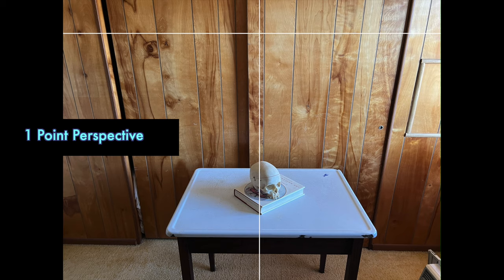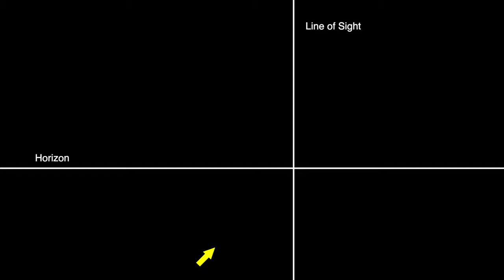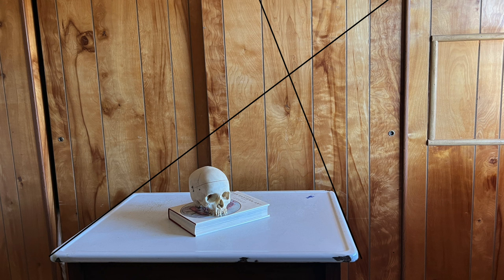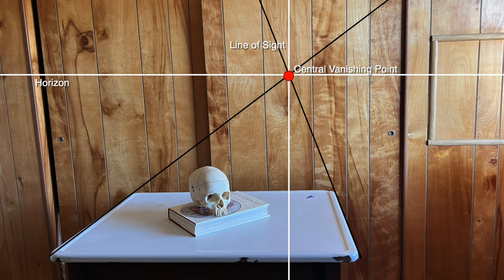The intersection of the horizon and the line of sight is called the central vanishing point. If the front of an object, like this table, is horizontal, then the sides angle back in space and cross each other at the central vanishing point. So I traced the two sides of the table back to find where they crossed, and then drew the horizon and the line of sight through that point.